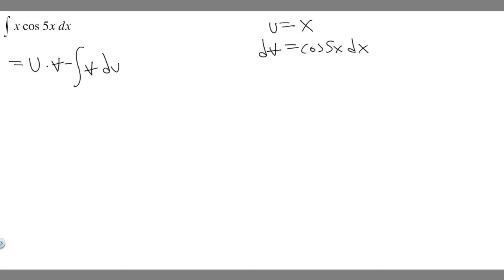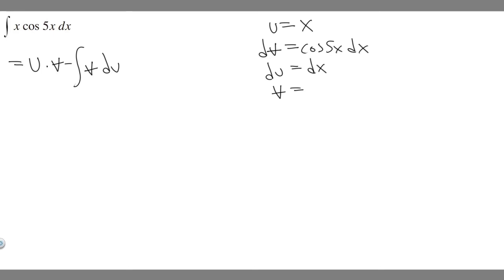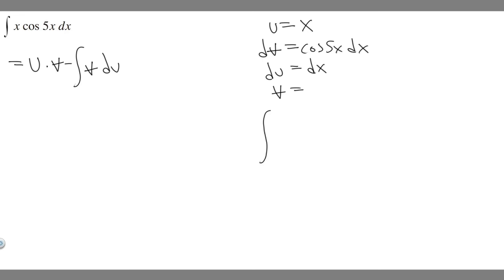So what we're going to want to do is find v and find du, because we need them to solve this formula. So what is du? du is just going to be the derivative of u, and u is equal to x. The derivative of x is just 1, and then we have dx after. So essentially du equals dx. And then what's v? So v is going to be the integral of the cosine of 5x.